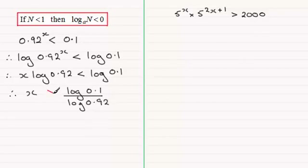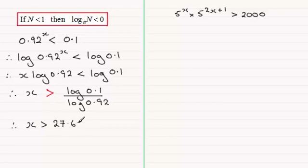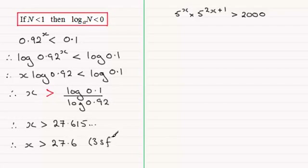So you've got to take care with this. That means we've got to reverse this inequality sign. I'm going to do it in red just to draw attention to that. From here on, it's just a question of using the calculator. If you enter that into your calculator, you should find that you end up with x is greater than 27.615. And if you gave that answer to three significant figures, x is going to be greater than 27.6 to 3SF. So that's the key point with this question — don't trip up when you divide by a negative number, or what doesn't seem to be a negative number.